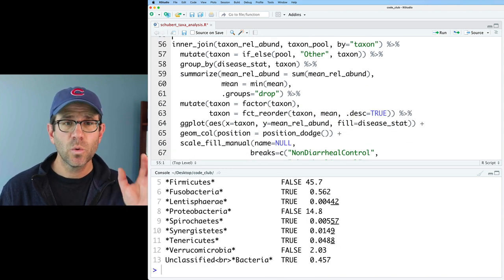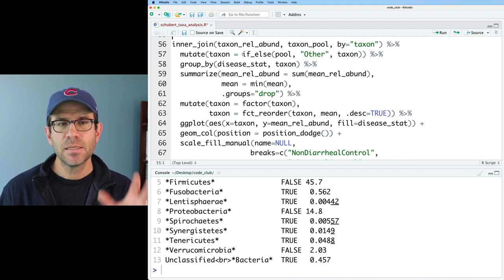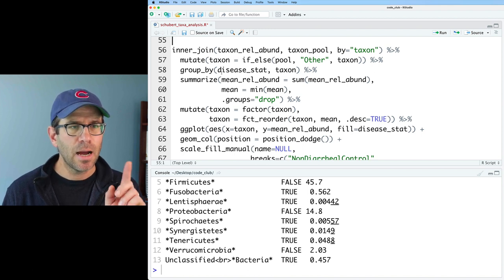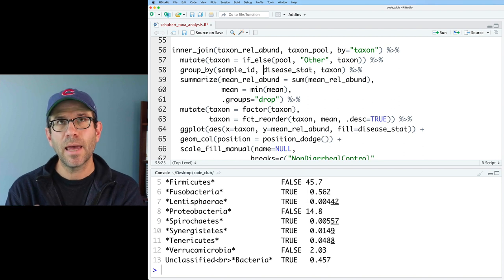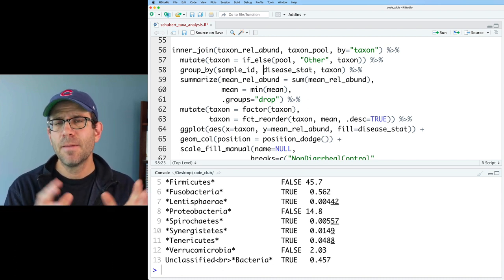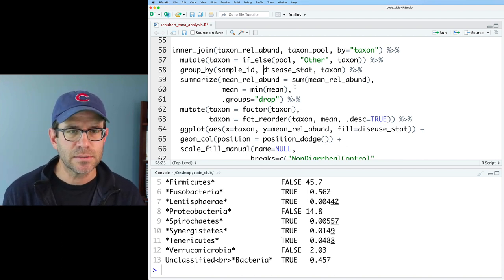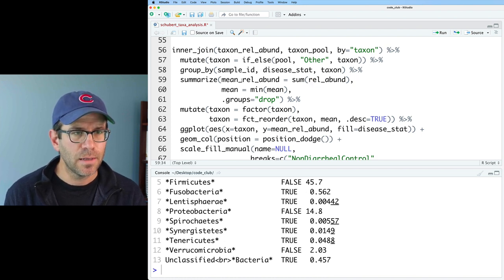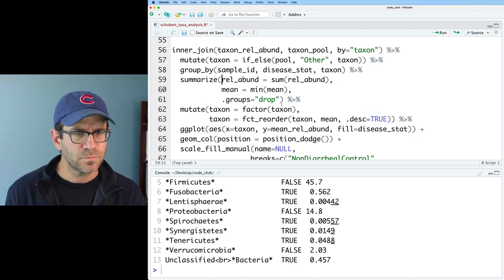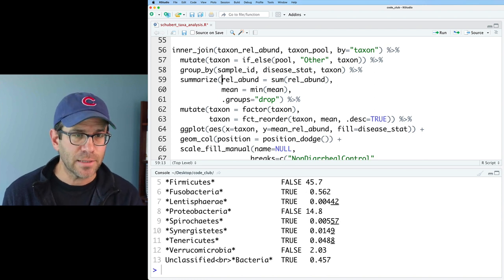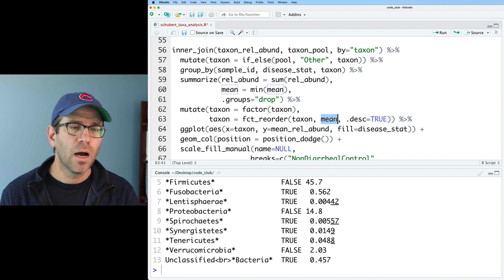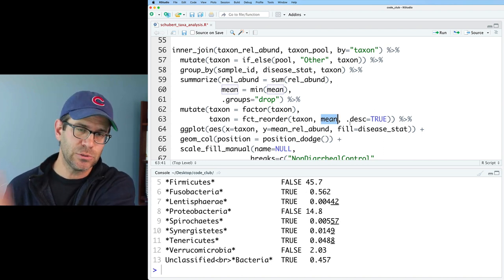Next, we're going to go ahead and bring this into our inner join with taxon-RELA-BUND. We then mutate taxon so that if pool is true, so if we should pool it, then we're going to call it other. Otherwise, we're going to use the taxon name. We'll then group by disease stat and taxon. Actually, we also want to add in here sample ID because we want to join together those taxa-relative abundances for each person separately. We're also leaving the disease stat in here because then when we finish the summary, we'll still have the disease status for each of the subjects. And so here then we're going to do sum on relabund and I will also call this relabund. And then the mean, it will be the smallest value of the mean. Again, this is used for sorting our different phyla. And then we've got all this good stuff for ordering our factor of the taxon, ordering our taxa using factor with FCT reorder, using that mean column to determine the order of the data. And we're going to do a descending sort from most abundant to least abundant. Good.